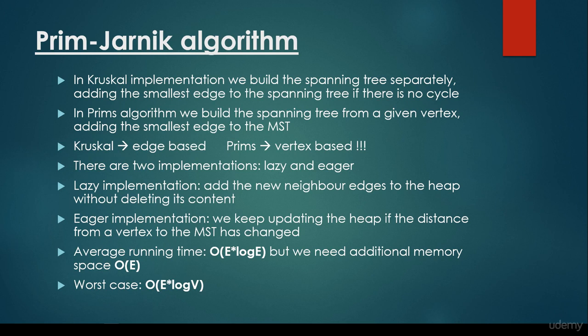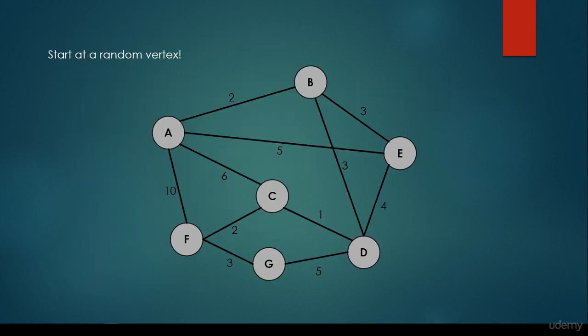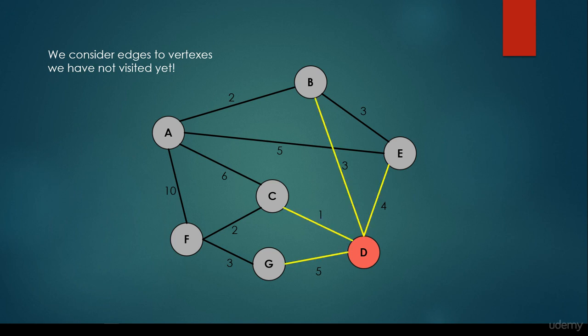The worst case scenario is O(E log V), where V denotes the number of vertices in the graph. Let's consider this graph. We start at a random vertex, for example vertex D, and we consider all its neighbors, so basically all the edges. Because we haven't visited G, haven't visited C, haven't visited B, and haven't visited E, these edges are going to be pushed to the heap.